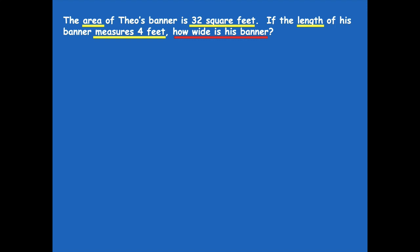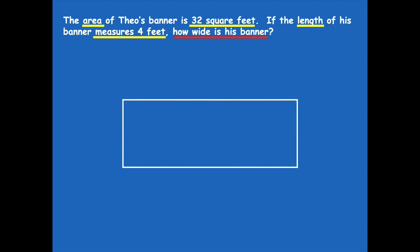When I see problems like this, I want to draw an area model. Remember, an area model is just a rectangle, so we're trying to find the missing side length. Here's my area model: the area is 32 square feet — I took that right from the problem — and the length is 4 feet. I don't know the width, so I'm going to label it as w for width.